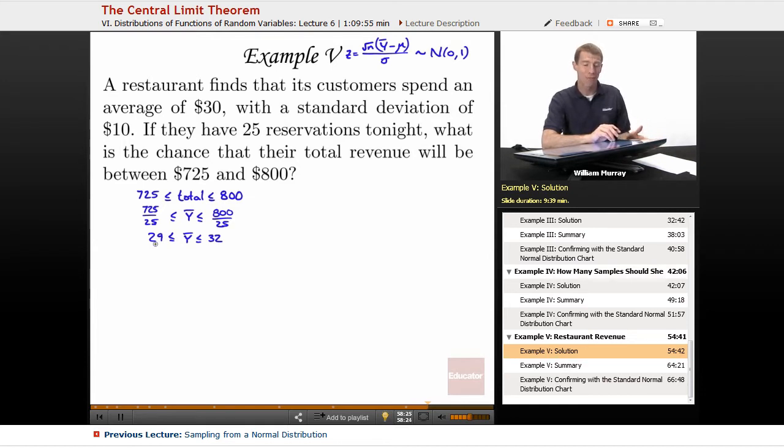So Y bar would have to be between $29 and $32. What that means is all the customers that come in tonight, they would have to spend an average of between $29 and $32. It doesn't mean they all have to spend between that, but it means, so you could still have some big spenders who come in and drop $50 on a meal. You could still have some cheapskates who just buy an appetizer and then slink out of there after spending $10. But on average, it has to come out between $29 and $32 per customer for tonight's customers.